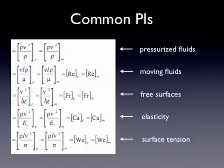If you have a low Reynolds number, then the viscous forces dominate, and you have laminar flow. And all the other pi numbers have similar sort of relationships.